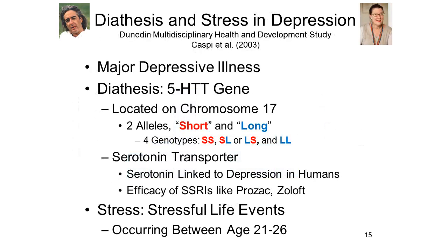In a similar study, Caspi and his colleagues examined the role of another gene, known as the 5-HTT gene, in major depressive disorder. The 5-HTT gene, located on chromosome 17, comes in two forms — short and long alleles — yielding four genotypes: two short alleles, a short and a long allele, a long and a short allele, or two long alleles.